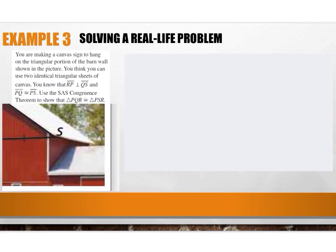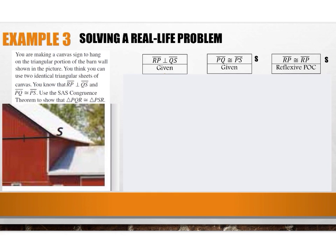Let's get our givens in the proof first. Given one: side RP is perpendicular to side QS, reason: given. Given two: side PQ is congruent to side PS, reason: given — this is our first set of corresponding sides marked S. We can also state that side PR is congruent to itself by the reflexive property of congruence, giving us our second S. Now I just need the included angle.